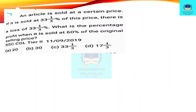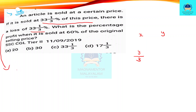An article is sold for a certain price. If it is sold at 33 and 1/3 percentage of this price, there is a loss of 33 and 1/3 percentage. The lower value of 33 and 1/3 percentage means that 1/3 of the cost price is reduced. So 2/3 of the cost price is the selling price at a loss of 33 and 1/3 percent.